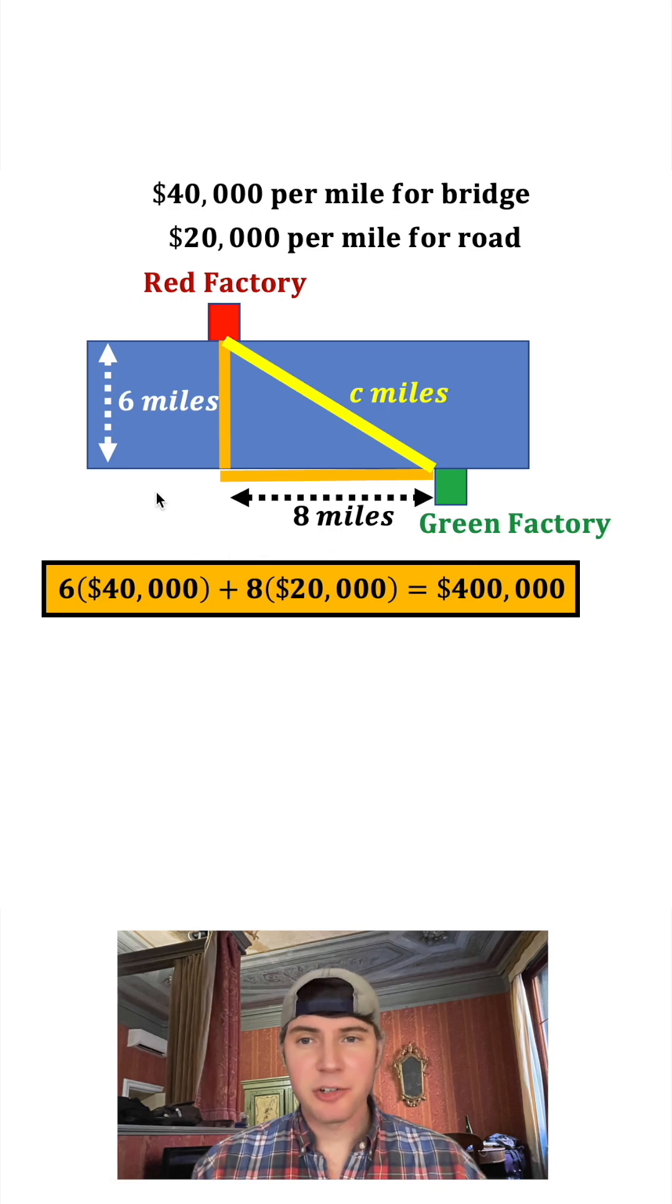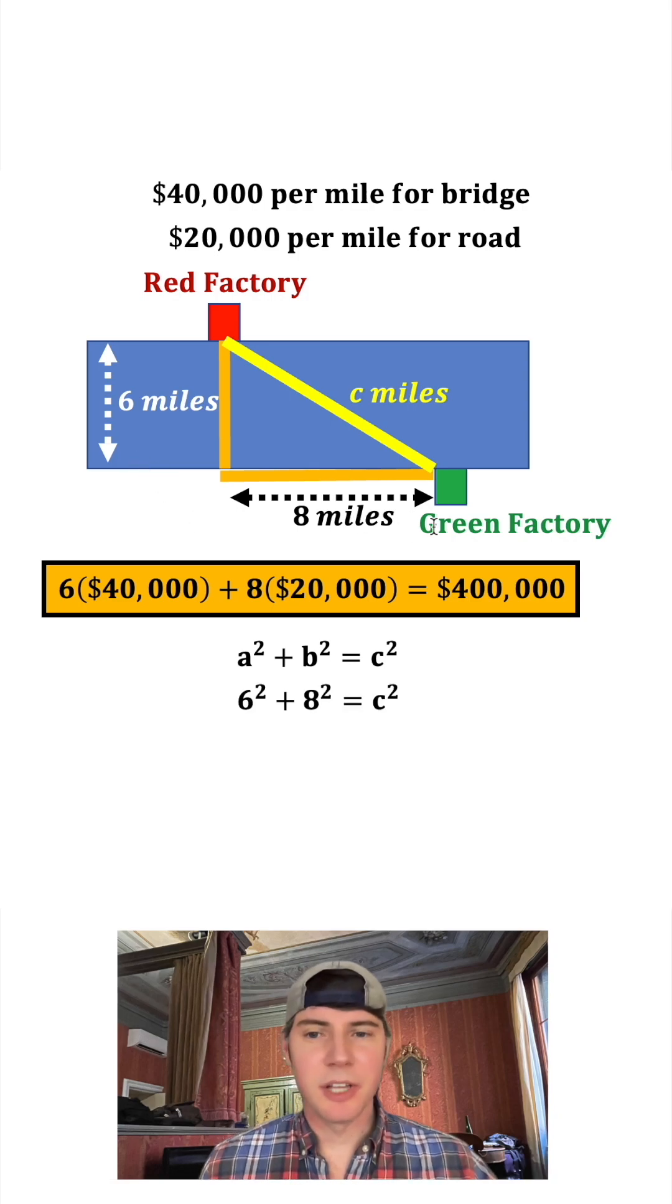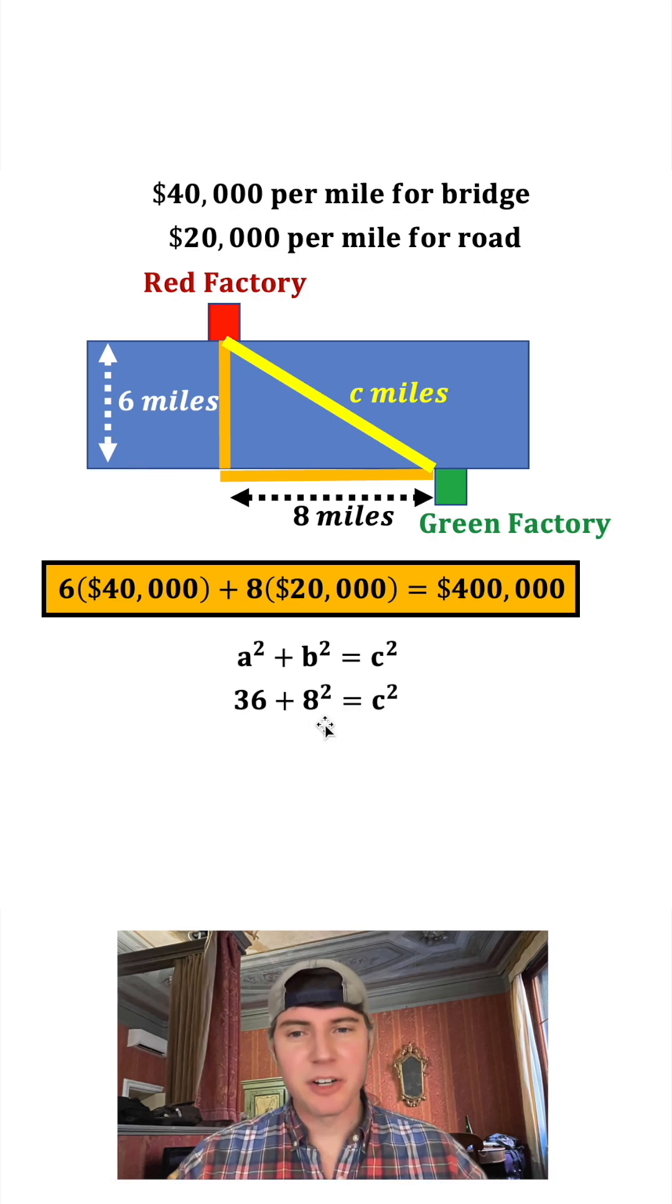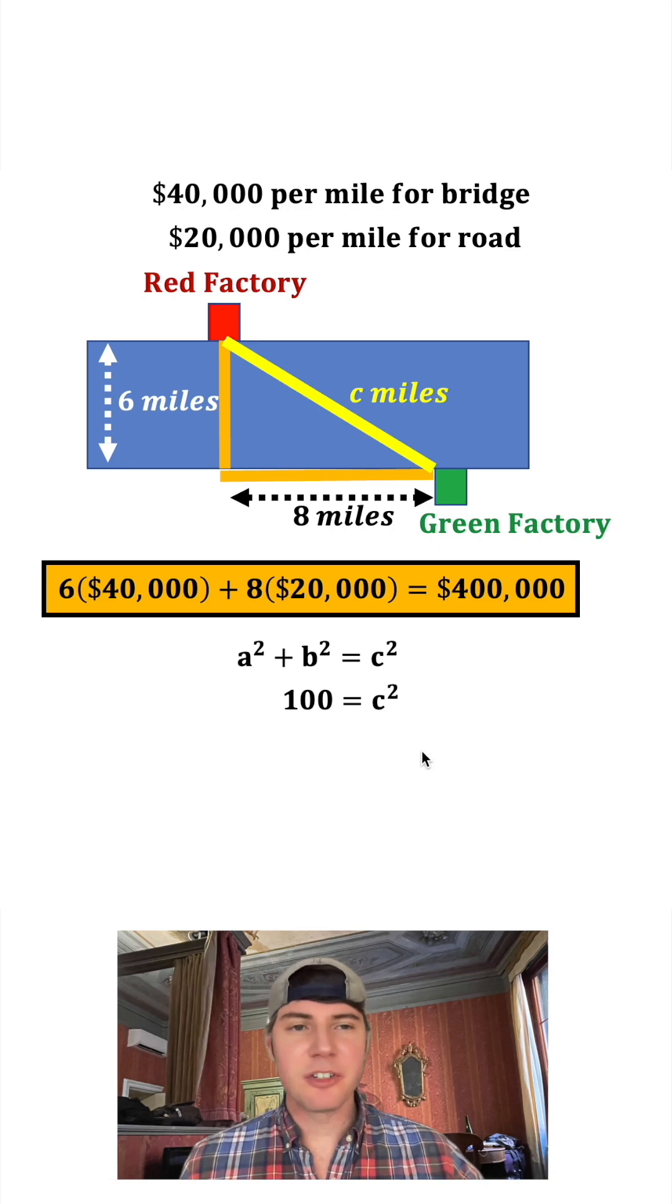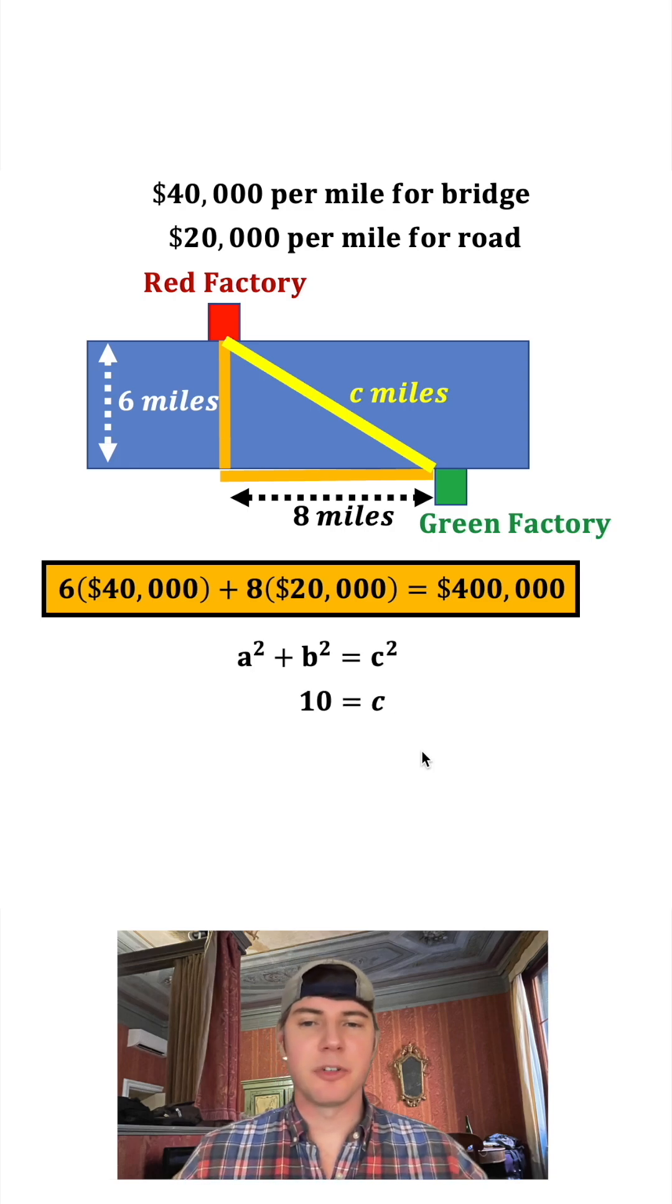This makes a right triangle, so I can find out how far c is by doing a² + b² = c², where a equals 6 and b equals 8. Six squared is 36, eight squared is 64, those add up to 100. Square root both sides and we get c equal to 10.